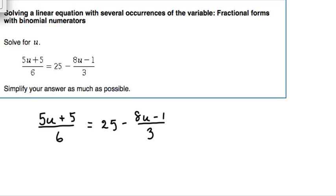Let's solve this linear equation with several occurrences of the variable and fractional forms with binomial numerators. What we have here is (5u + 5)/6 equals 25 minus (8u - 1)/3.